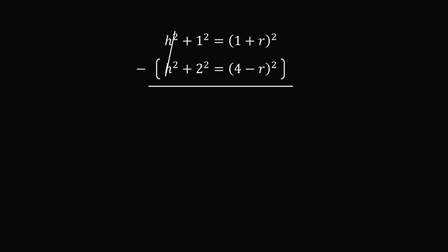The H squared variables will cancel out. So we're left with an equation that's only in the variable R. We have 1 squared minus 2 squared is equal to the square of 1 plus R minus the square of 4 minus R.